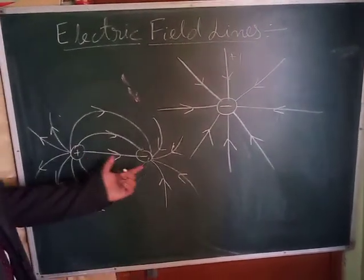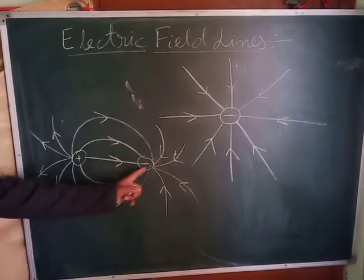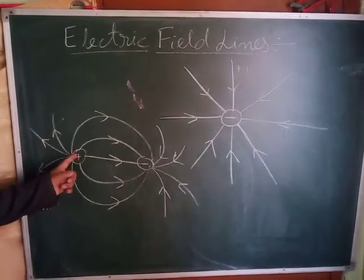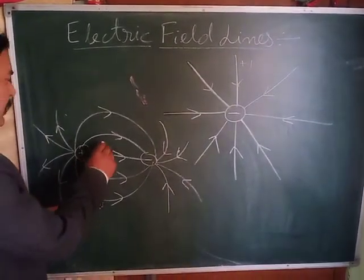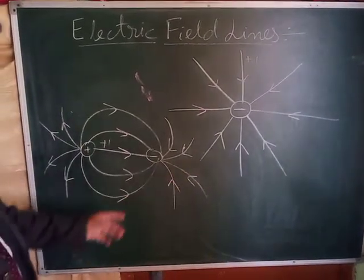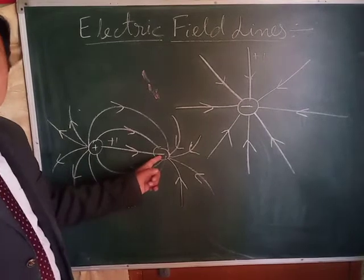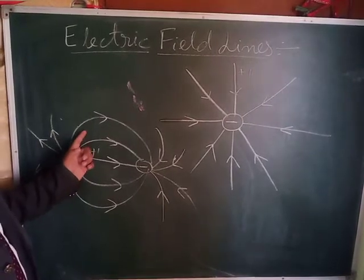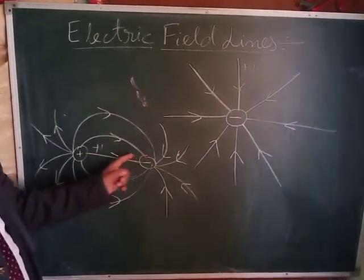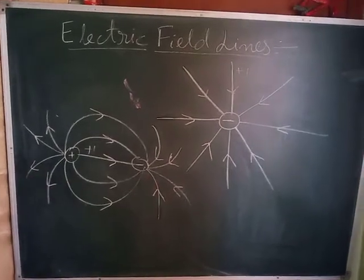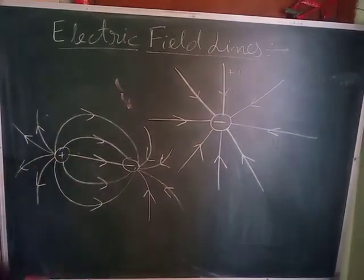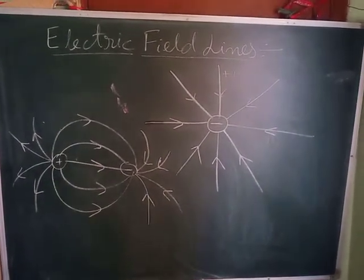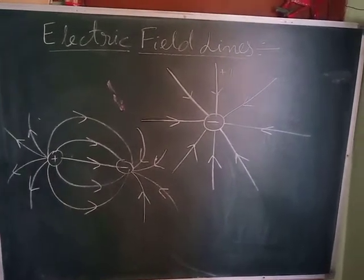Now suppose you have a pair of charges — one positive and one negative. If you place a unit positive charge near the positive charge, it will be repelled and will move away. At the same time, the negative charge will attract it, so it will reach near the negative charge following a curved path. These paths drawn in different positions are the electric field lines — this is the pattern of electric field lines due to a pair of opposite charges.